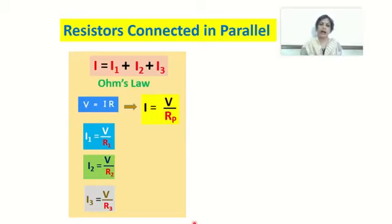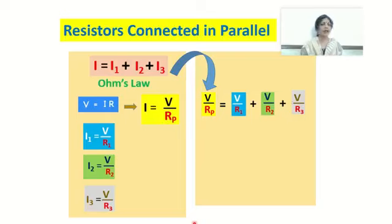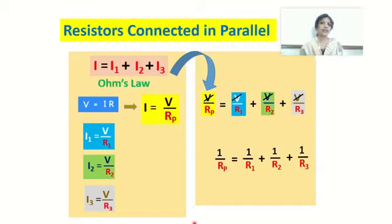Now substituting the values of I, I1, I2, and I3 into the equation I = I1 + I2 + I3, we write: V/Rp = V/R1 + V/R2 + V/R3. Dividing the whole equation by V, we can cancel V from every term, leaving us with 1/Rp = 1/R1 + 1/R2 + 1/R3. This equation tells us that the reciprocal of the equivalent resistance of parallel resistors equals the sum of the reciprocals of the individual resistors.